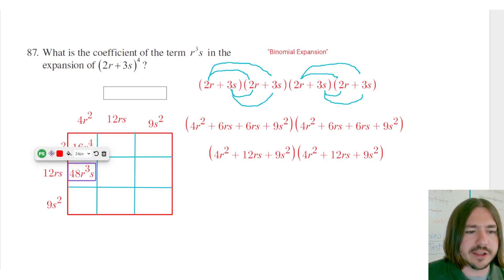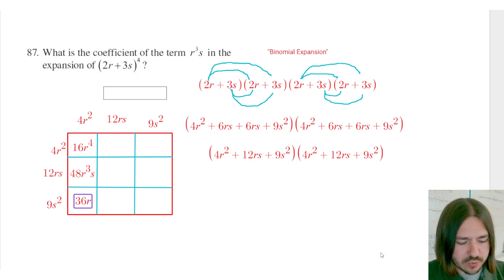This is not going to be our final answer because we might have another term that has the same variables that we'll have to combine. But we want to keep an eye on this one. That's got the term that we're looking for. Down here we have 4 times 9 is going to be 36r squared s squared.